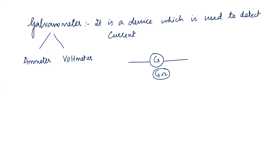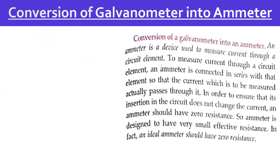So how are we going to convert a galvanometer into an ammeter? We will learn this first, and then we will learn how a galvanometer can be converted into a voltmeter. As we know, ammeter is always connected in series. Suppose this is a simple circuit, and in this circuit, if I want to measure current, I have to place an ammeter in series.